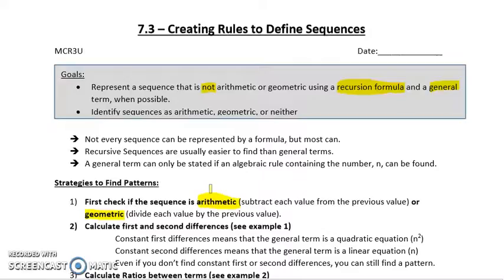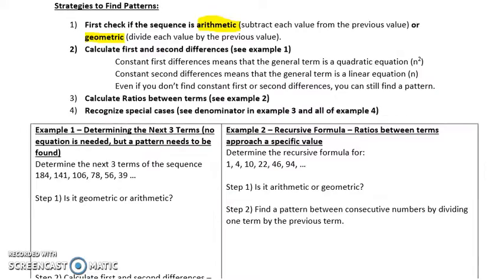The second strategy we have is calculate first and second differences. Constant first differences means that the general term is linear, a linear equation. In other words, it's just n, so y equals mx plus b, for example. Constant second differences means that the general term is a quadratic equation, so n squared.